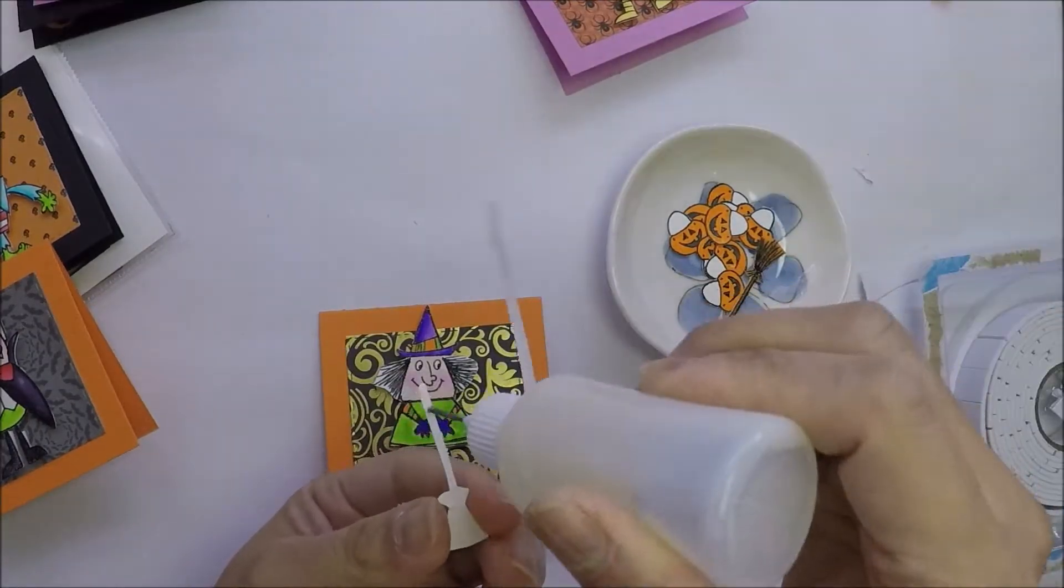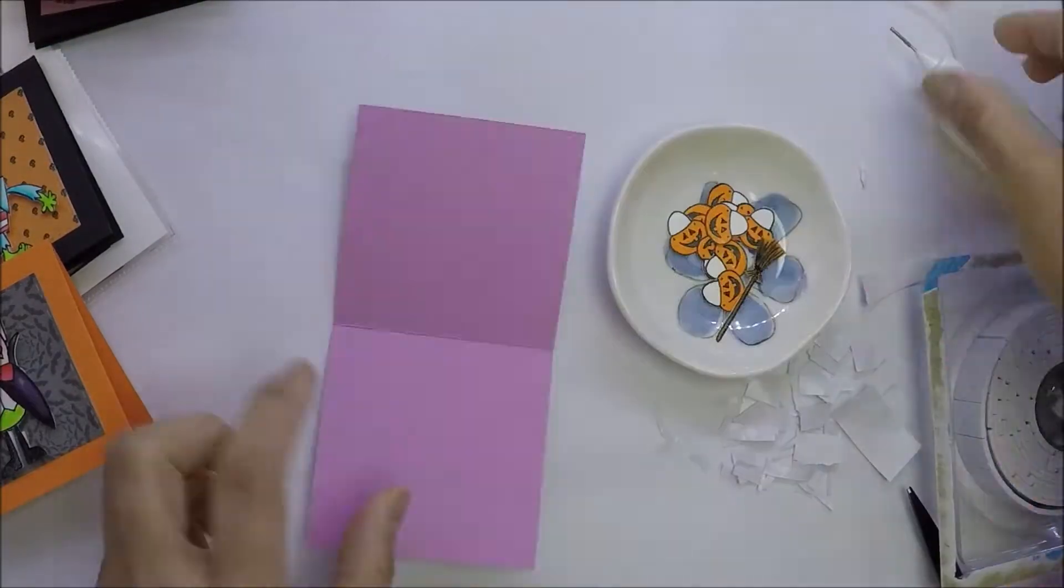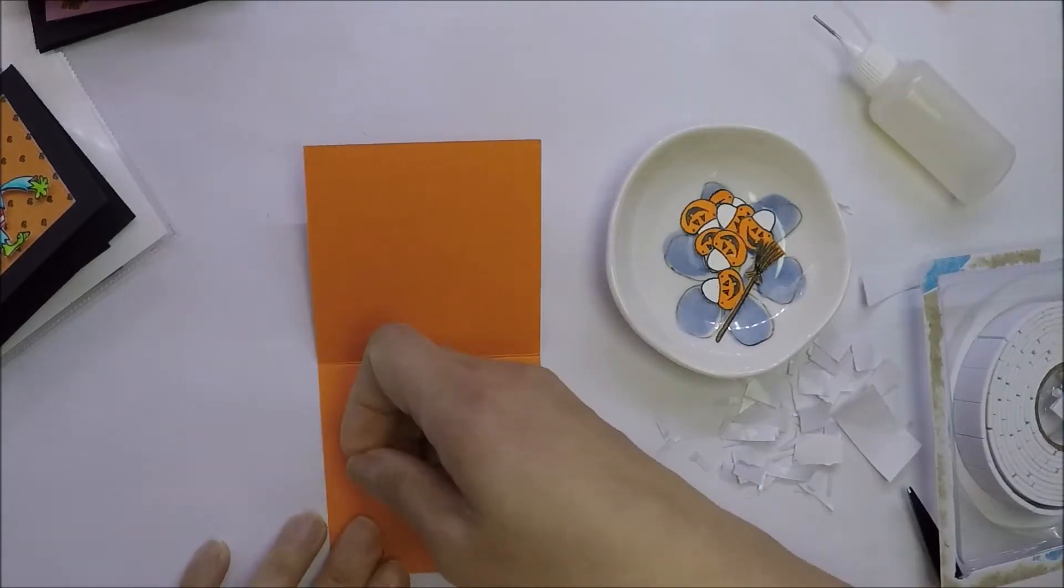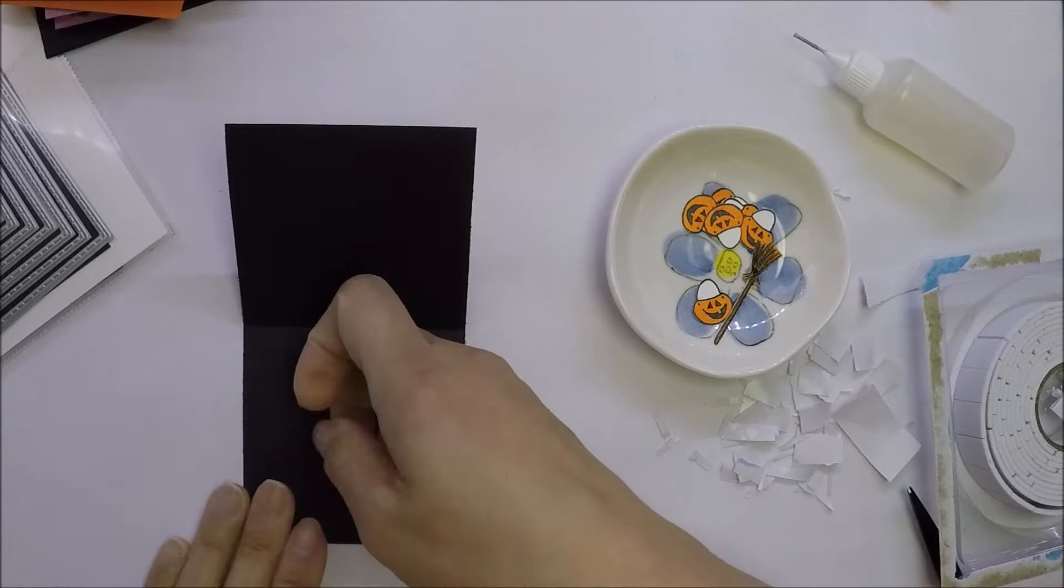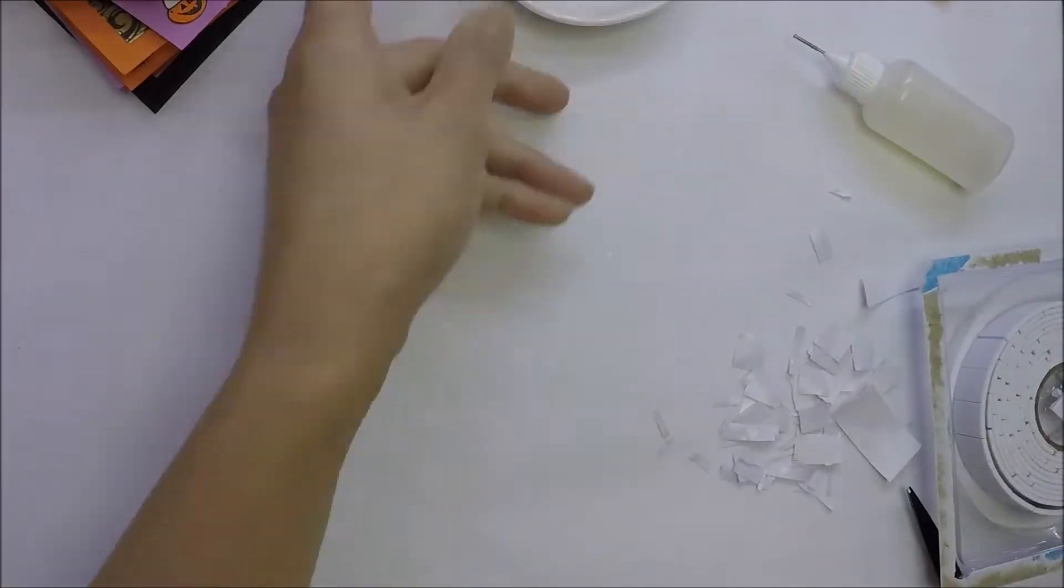For the inside of the cards, I will adhere the colored brooms and pumpkin buckets in the corner of the card using glossy accents. I will use these lunch notes to put in my son's lunch box. I didn't add any sentiment on the cards because I will just write a note inside.